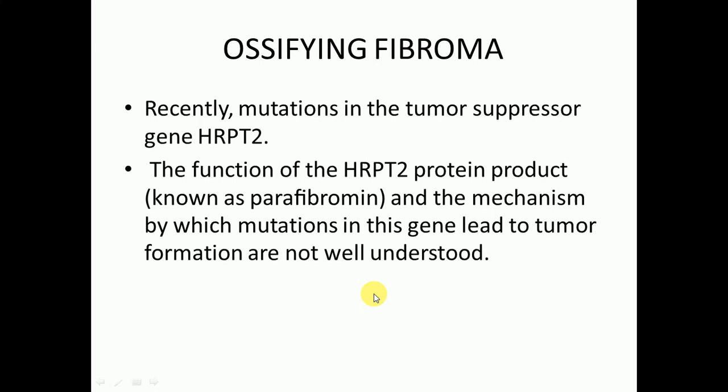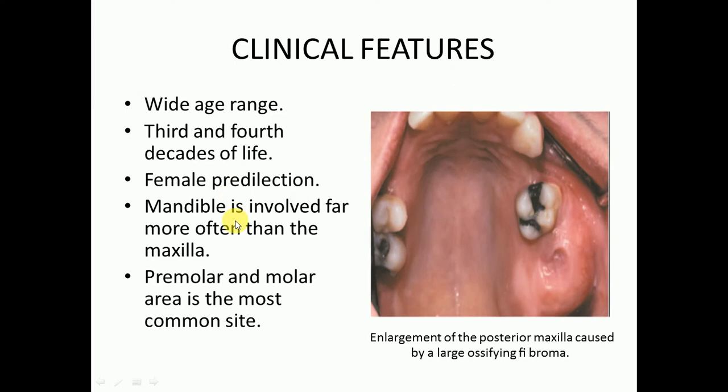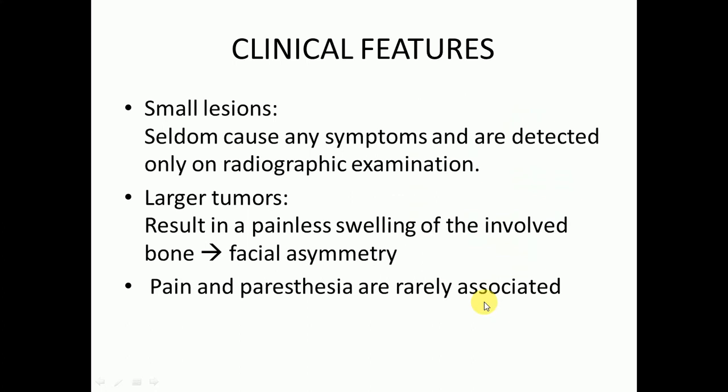Regarding clinical features, ossifying fibroma has a wide age range, but the third and fourth decades of life are most common. It is most commonly found in females, and the mandible is more commonly involved than the maxilla. In the mandible, the premolar and molar areas are most commonly affected. Here you can see enlargement of the posterior maxilla caused by a large ossifying fibroma.